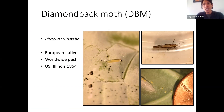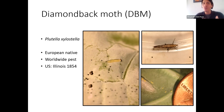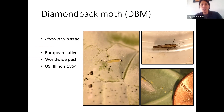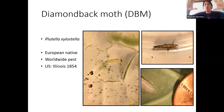Diamondback moth is one of the key pests for vegetables across California, the United States, and worldwide — there is nowhere in the world that doesn't know about diamondback moth. It's a pain in the neck. Plutella xylostella is a European native, now worldwide, and was first introduced in the United States in 1854 in Illinois. That's an immature feeding through the leaf, those are the eggs, and that is the adult diamondback moth — you can see the diamond shapes on the resting adult. They're teeny tiny.